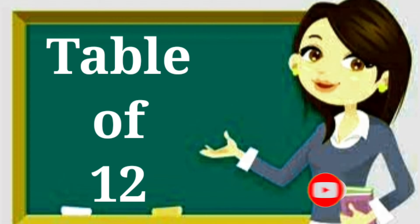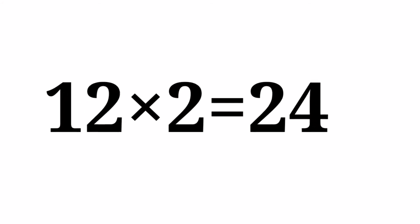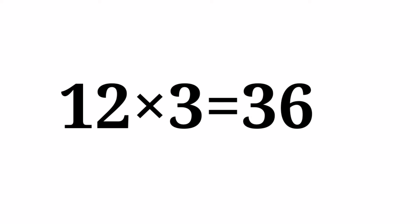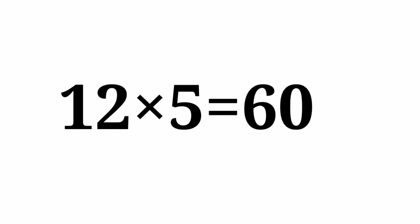Table of 12. 12 ones are 12. 12 twos are 24. 12 threes are 36. 12 fours are 48. 12 fives are 60.